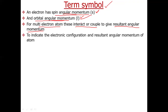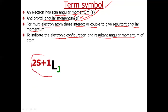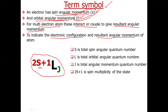To indicate these interactions and the electronic configuration, and the resultant angular momentum that comes from the interaction of S and L, we use term symbols. The term symbol has the form 2S+1LJ, where capital S is the total spin angular quantum number, capital L is the total orbital angular quantum number, capital J is the total angular momentum quantum number, and 2S+1 is called the spin multiplicity of the state.